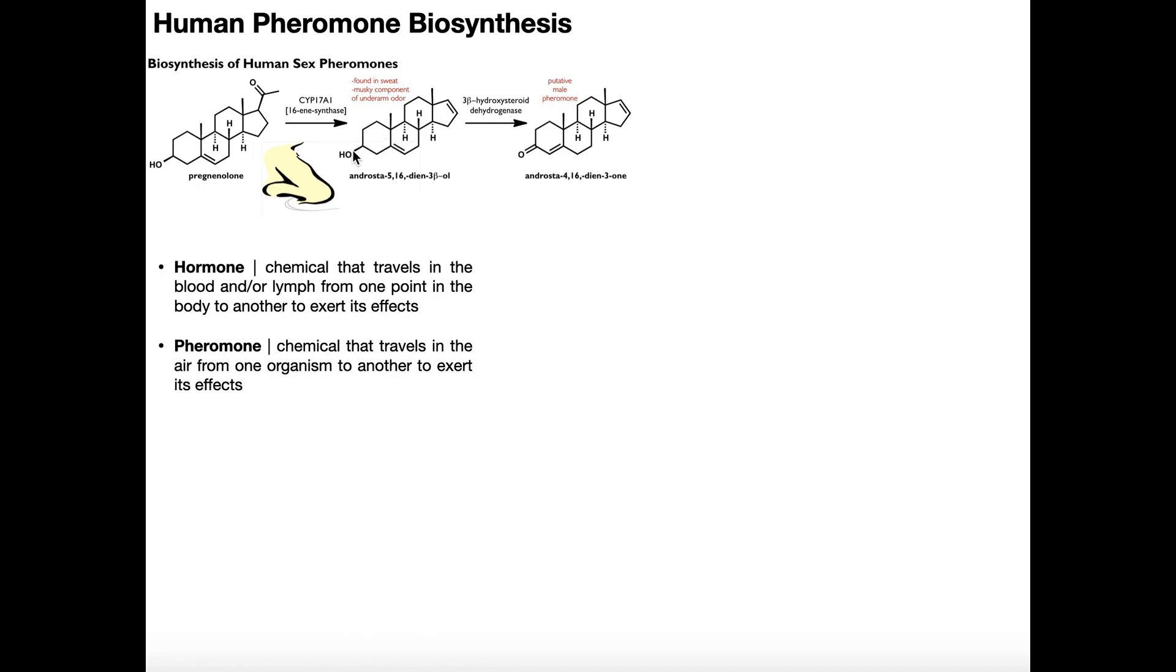What it does is it takes this hydroxyl group on the pheromone right here, and it turns it into a ketone. You can see that. And you have a net isomerization of this double bond, and it moves over here. So you can see that. So this compound over here is androstadienone.